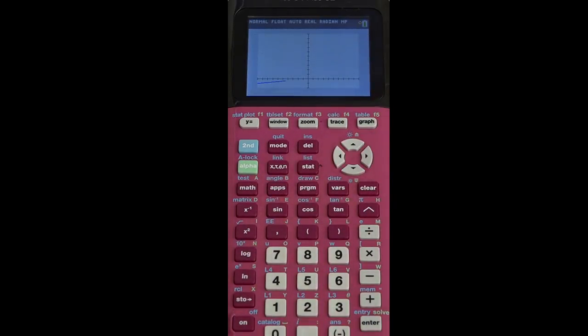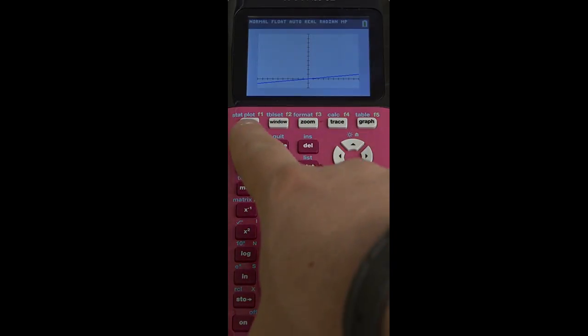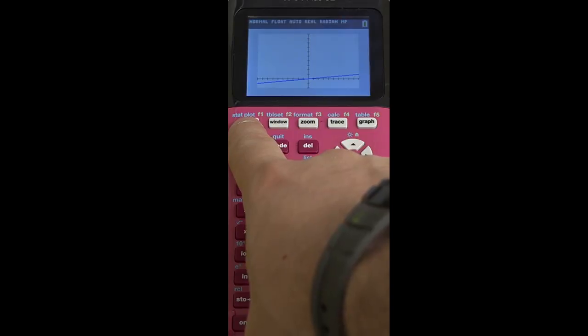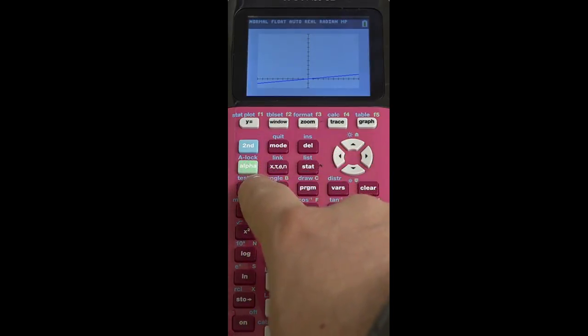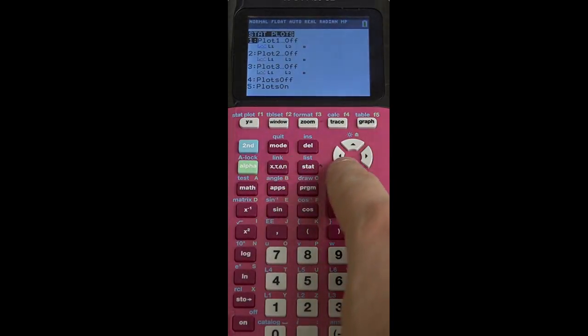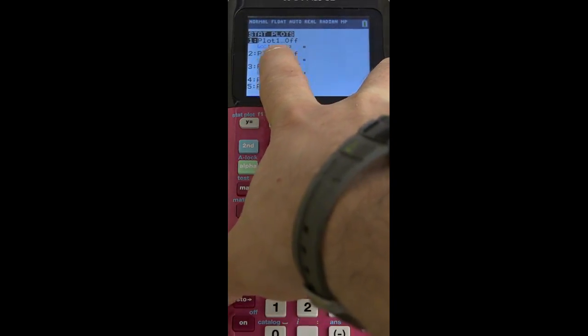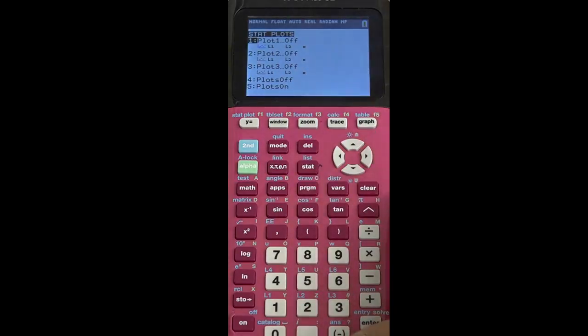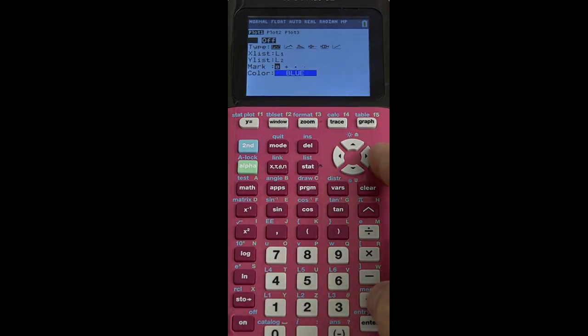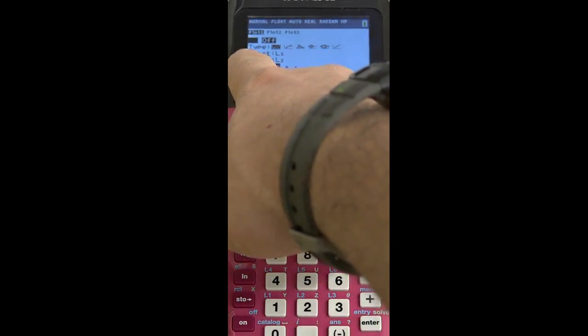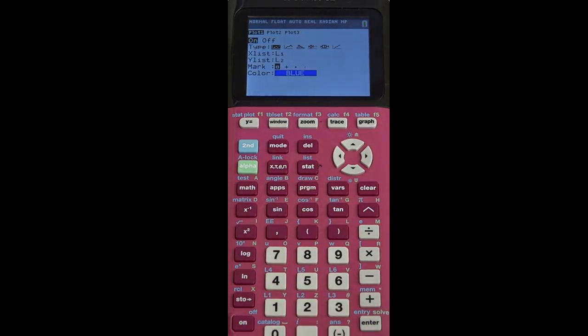Well, I've still got my function over there, but I don't see any of the data points that I entered. That's because I didn't turn any of them on in stat plot. So I press second y equals, and here I've got to specify I want these points made out of L1, L2 to be turned on. So I press enter in here, and then on the word on, I'm going to press enter again. And now that stat plot will be on.